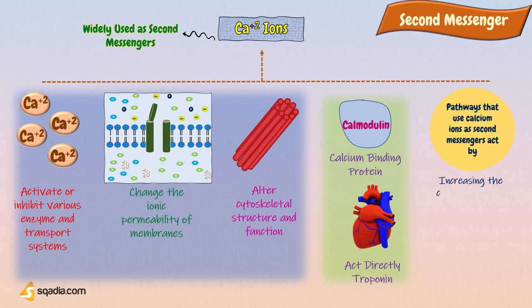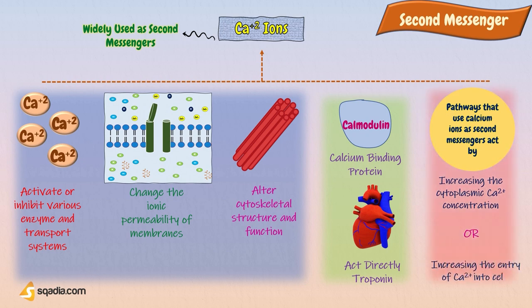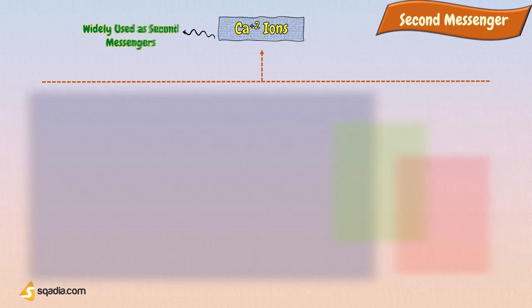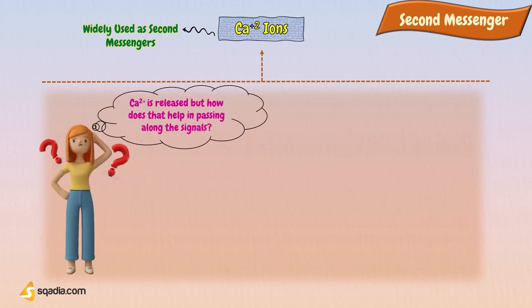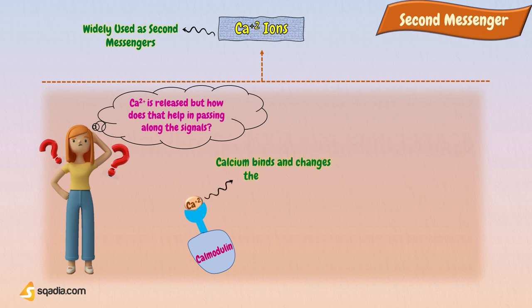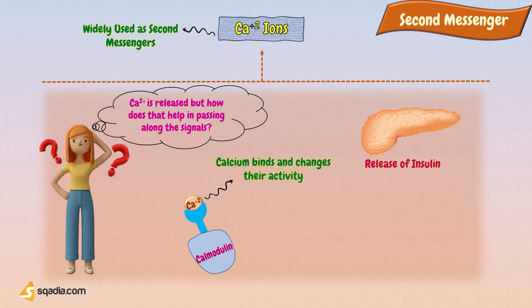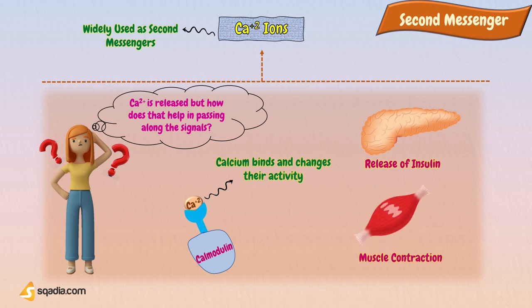Pathways that use calcium ions as second messengers act by increasing the cytoplasmic calcium ion concentration. This increase is produced by releasing calcium ions from intracellular stores or by increasing the entry of calcium ions into the cell. Released calcium attaches to proteins that have binding sites for calcium and changes their activity. This response differs for different cell types — for example, calcium ion signaling in pancreatic cells leads to the release of insulin, whereas in skeletal muscle cells it leads to muscle contraction.